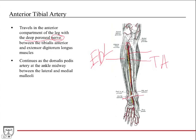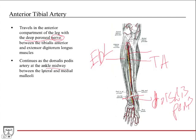At the ankle joint, near the extensor retinacula, the anterior tibial artery continues as the dorsalis pedis artery — the same structure, just renamed by location, analogous to how the external iliac becomes the femoral artery past the inguinal ligament. The dorsalis pedis pulse can be palpated on the dorsal surface of the foot, midway between the lateral and medial malleoli.